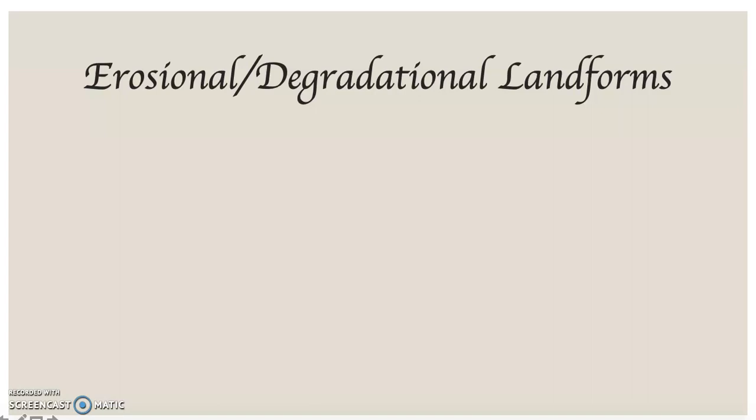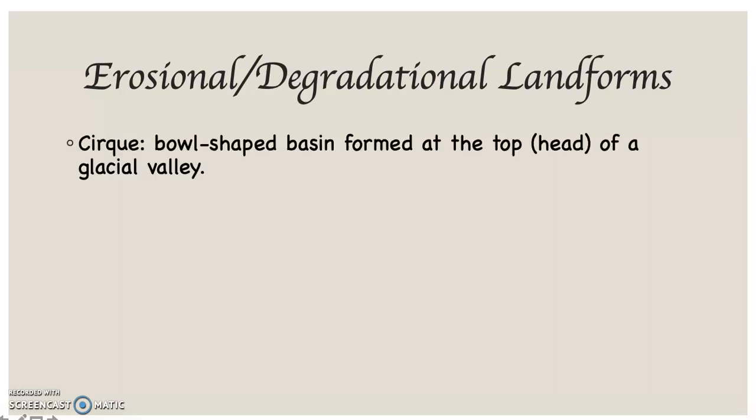The erosional or degradational landforms related to glaciers come down to four. The first one is a cirque. This is a bowl-shaped basin, shaped like a cereal bowl or a soup bowl. It's formed at the top, or what's known as the head of the glacial valley, way up in the tops of the mountains.